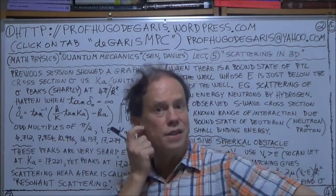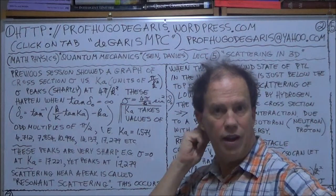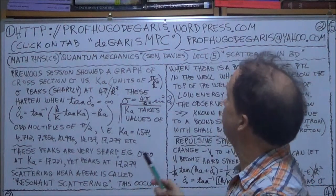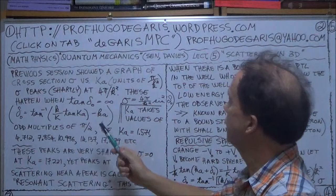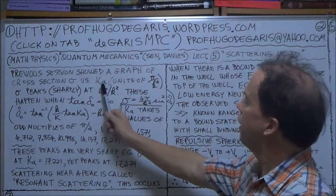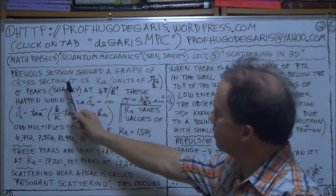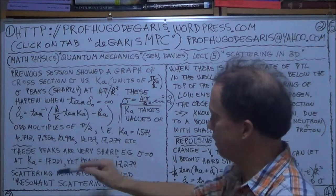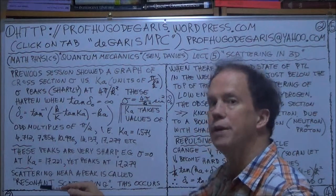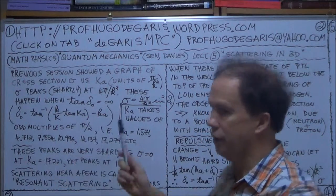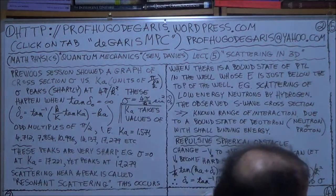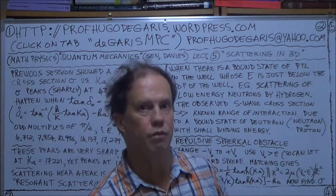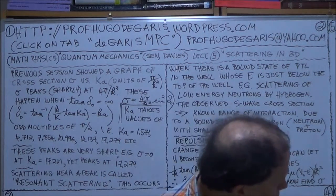In the previous session, you may remember a graph of mapping big Ka versus the total cross-section, little sigma, and we got some very sharp peaks occurring at odd integer multiples of pi over 2.